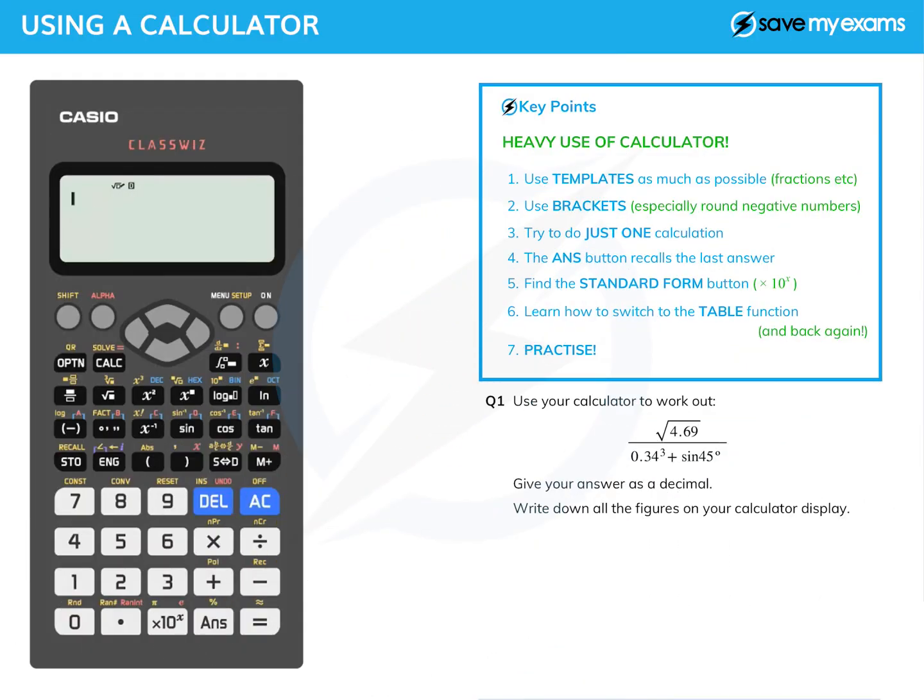Here we're going to look at using a calculator as efficiently as possible during any GCSE question. The various tricks are to use templates as much as possible. If you look particularly at the row of black keys just under the option and calc, you'll see a fraction template, a square root template, x squared, a power template, and so on.